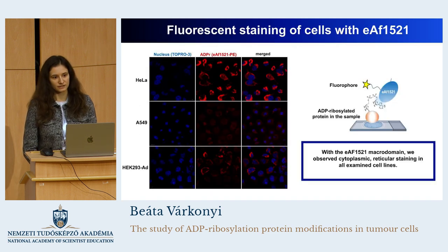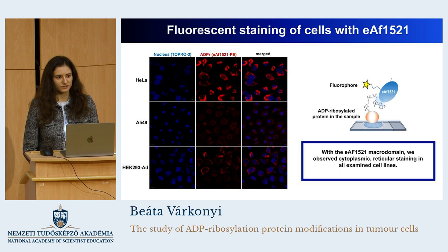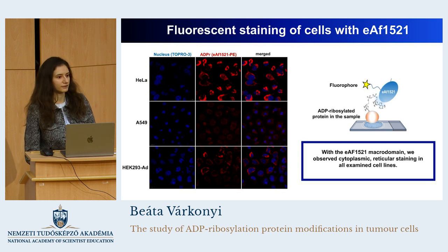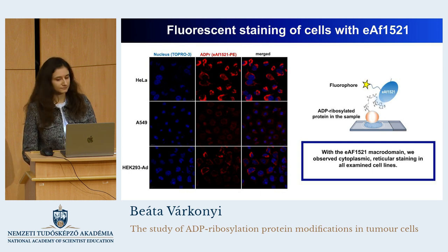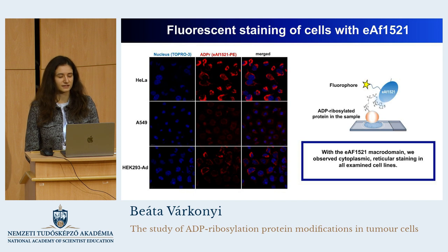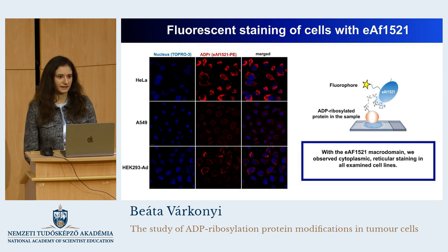The labeled macrodomain was then used for cell stainings. What we observed was not a diffusely cytosolic staining, but rather a cytoplasmic, reticular staining, that we examined in two cancer cell lines, HeLa and A549, and even in non-cancerous human embryonic kidney cells. With this experiment, we showed that the cytoplasmic ADP ribose, suggested as a prognostic biomarker, must actually be associated with a reticular cytoplasmic organelle.